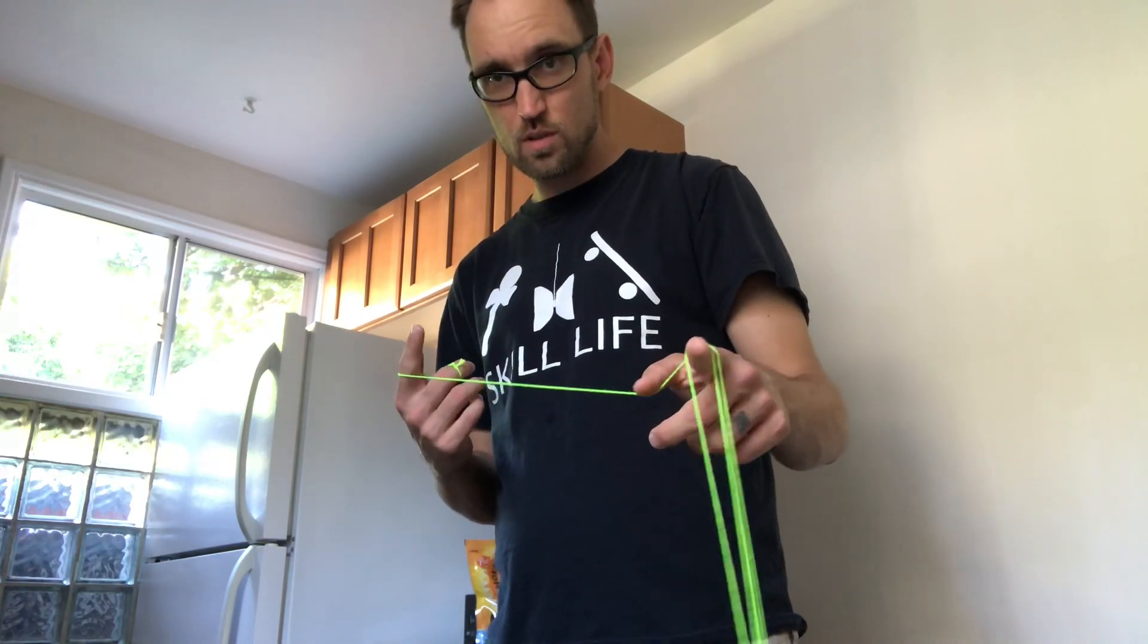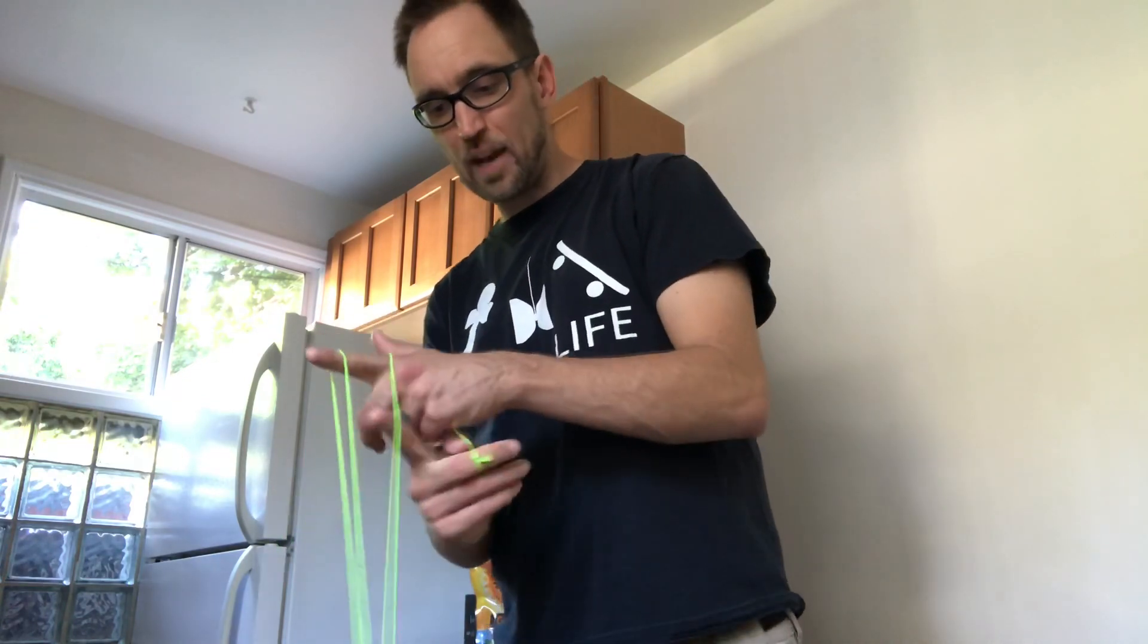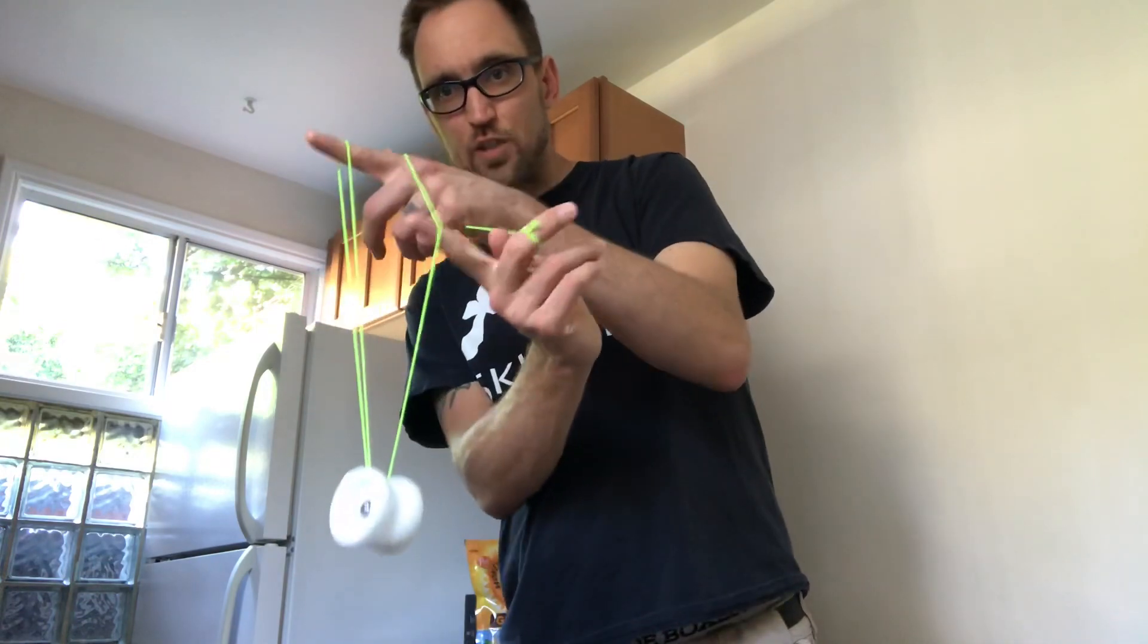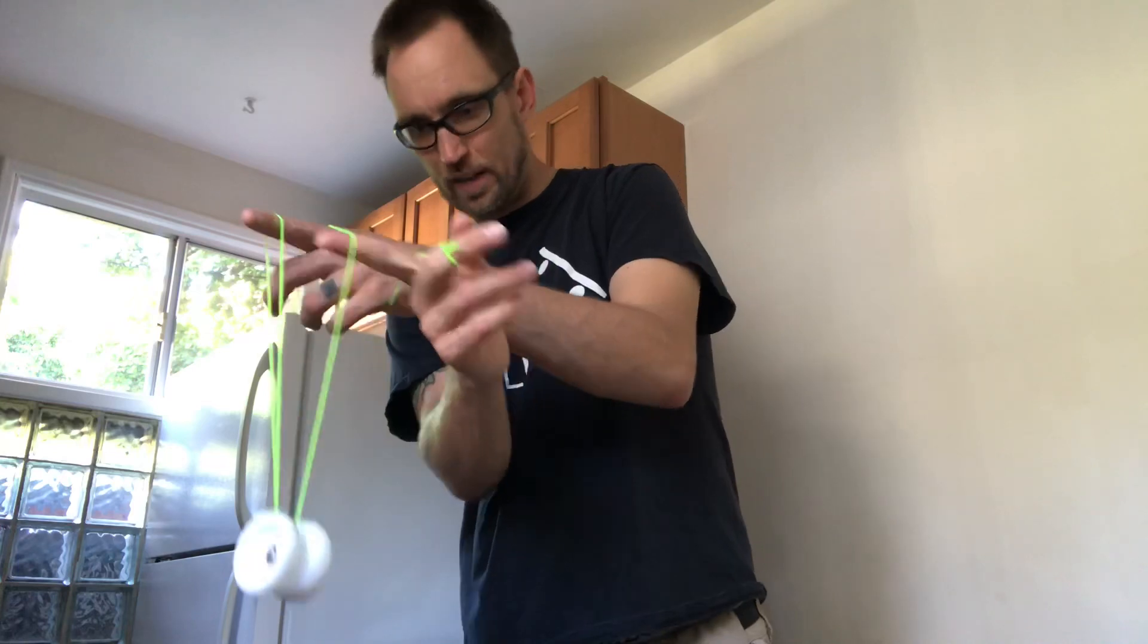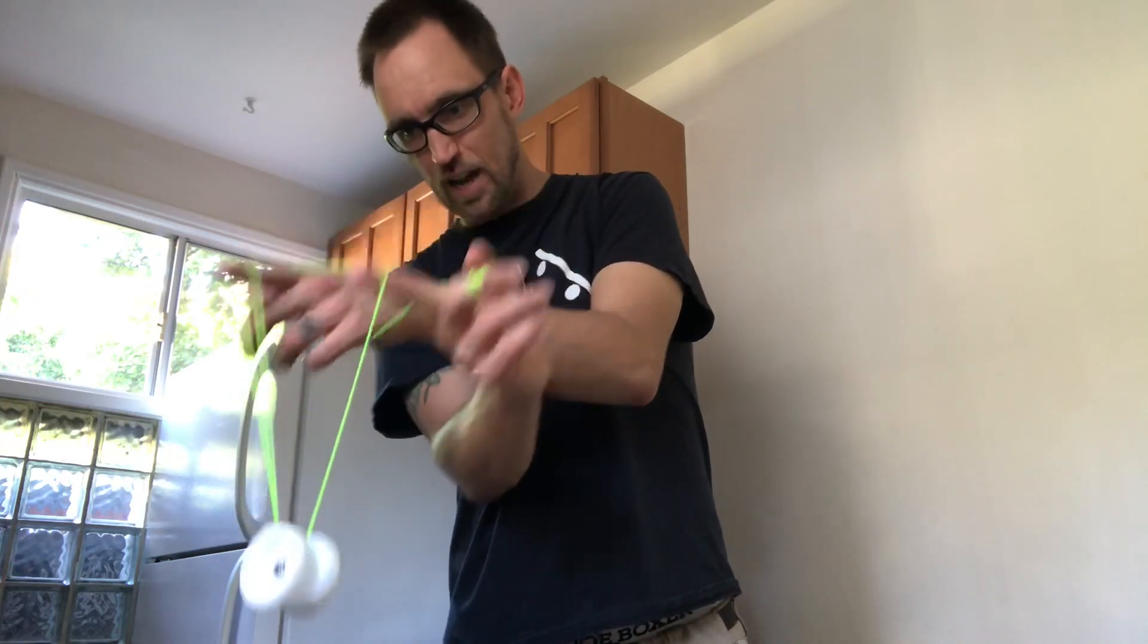Undermount, drop. Swing it up this way, hook a finger in here, catch the string coming off the left side if you're right-handed, right if you're left-handed, and you're going to pop the yo-yo out that way.